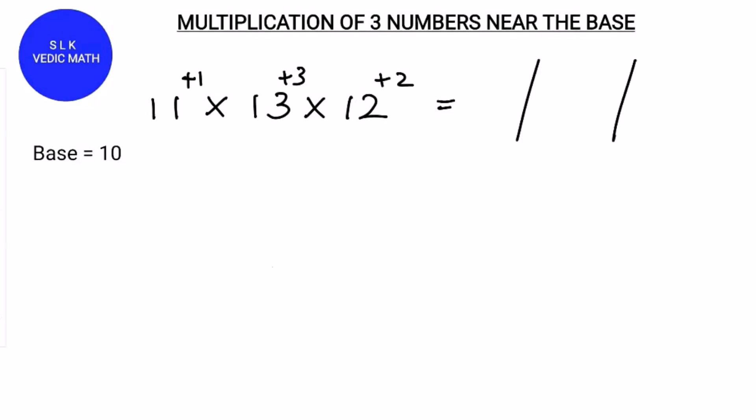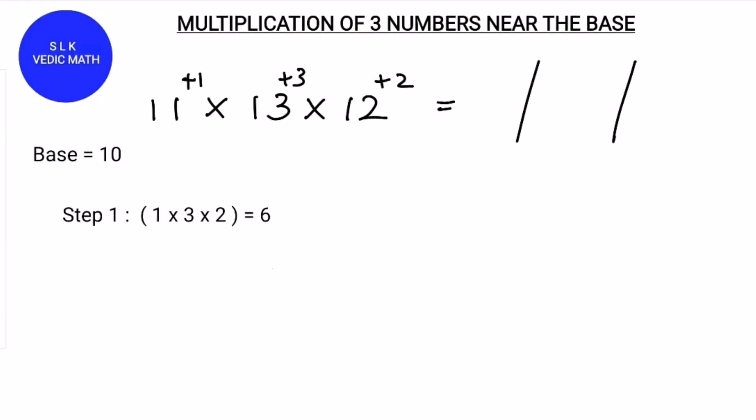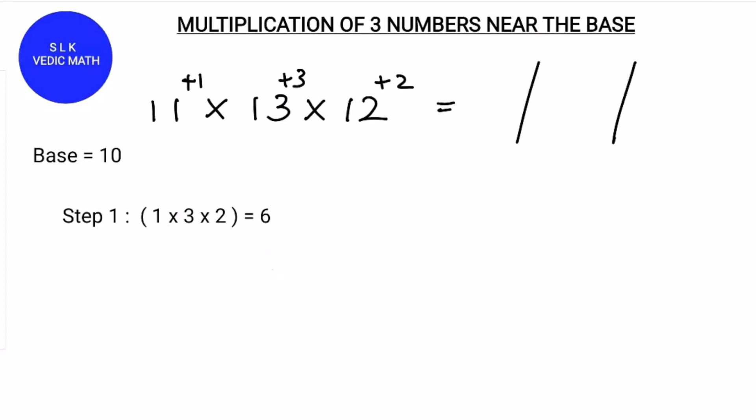Next put 2 strokes to divide it into 3 parts. First multiply the differences. So 1 × 3 × 2 which is 6. So write 6 in the last part.